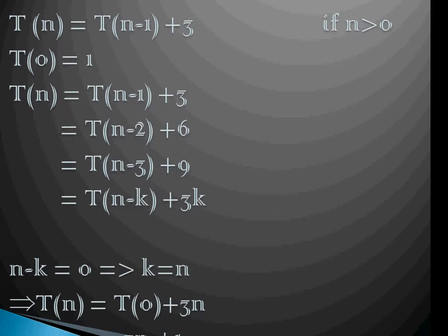For n equals 0, T(0) is equal to 1, because we only make a comparison here and simply return. Now we have T(n) = T(n-1) + 3.